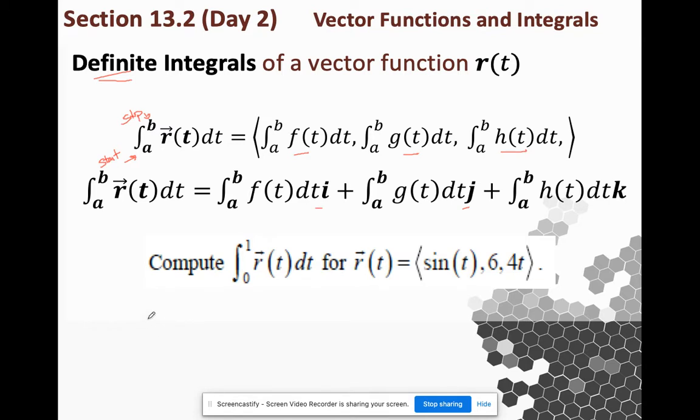So given this one here, I'm literally just going to anti-differentiate sine from 0 to 1, anti-differentiate 6 from 0 to 1, and anti-differentiate 4t from 0 to 1.